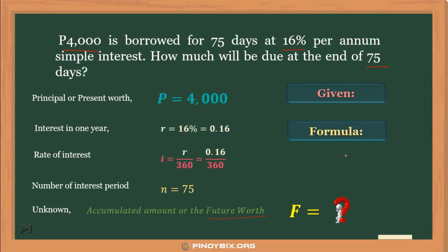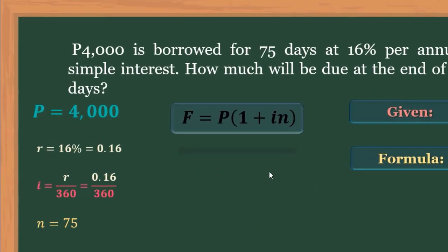We will be using the formula for simple interest. The formula, given the present worth and looking for the future worth, is: F is equivalent to the present worth multiplied by the quantity 1 plus i, where i is the rate of interest, multiplied by n, the number of interest periods.